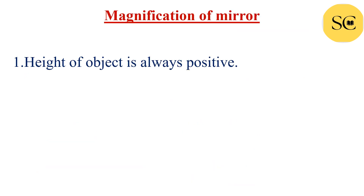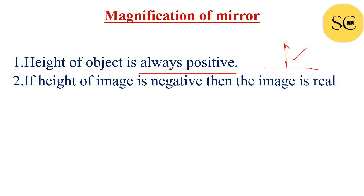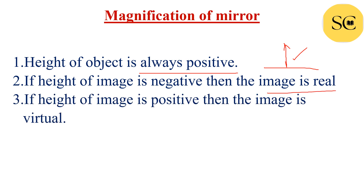Height of object is always positive because the object is always placed over the principal axis. If height of image is negative, then the image is real and real image is inverted. If height of image is positive, then the image is virtual. We must learn these points.